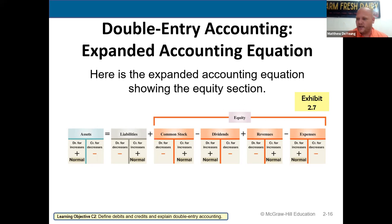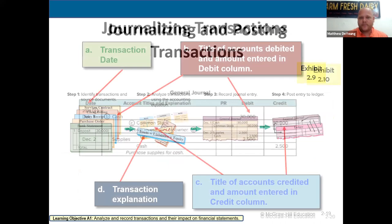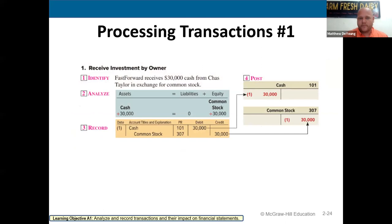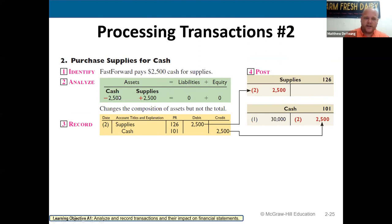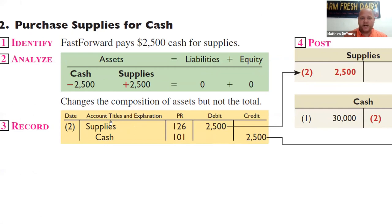We're dealing with two assets: less cash, more supplies. The way that gets recorded in the general journal is: on this date, debit always goes first — debit supplies $2,500, credit cash $2,500. The accounting equation is balanced; we know we did our job and can move on to the next thing.